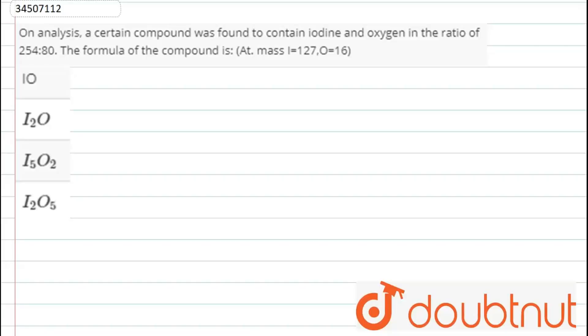This question has been asked. On the basis of analysis, a certain compound was found to contain iodine and oxygen. The ratio is given. So, the formula of the compound is: